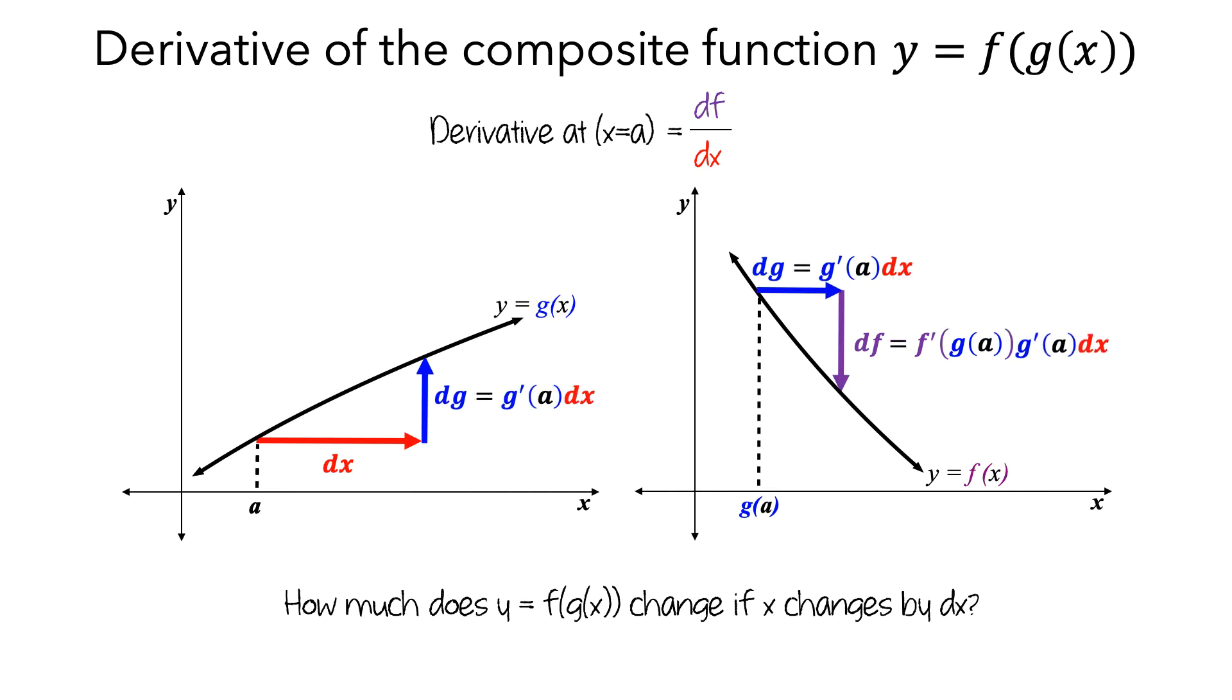Now, since dg is equal to g prime of a times dx, we can write df as f prime of g(a) times g prime of a times dx.